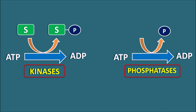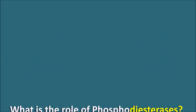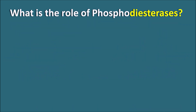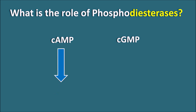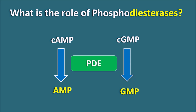Phosphodiesterases are not involved in ATP/ADP metabolism. Instead, they mainly act on two important substrates: cyclic AMP and cyclic GMP. Cyclic AMP can be converted to AMP, whereas cyclic GMP can be converted to GMP — both reactions mediated by phosphodiesterases. Different types of phosphodiesterases exist: some are specific to cyclic AMP, some to cyclic GMP, and some are common to both.